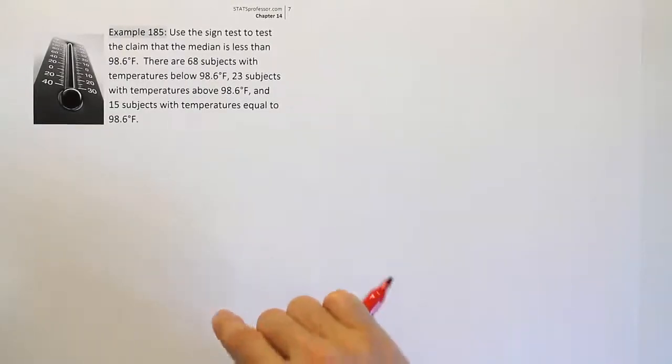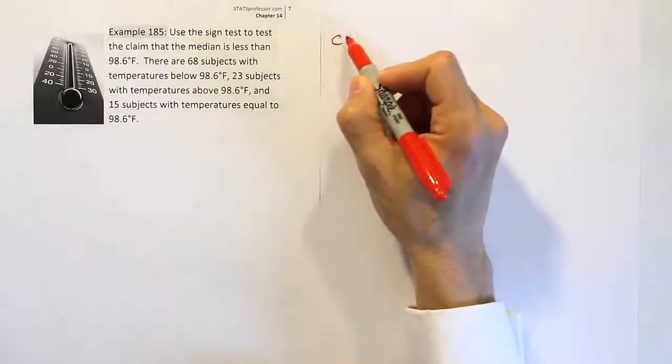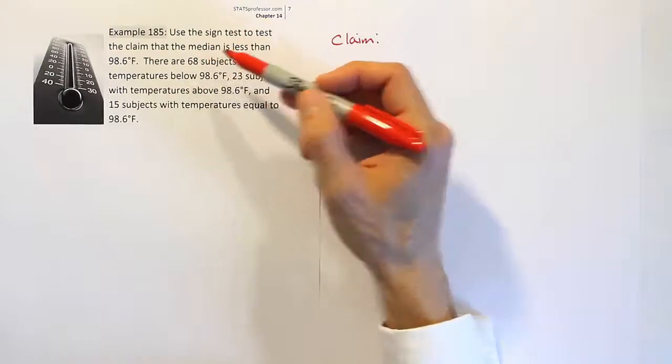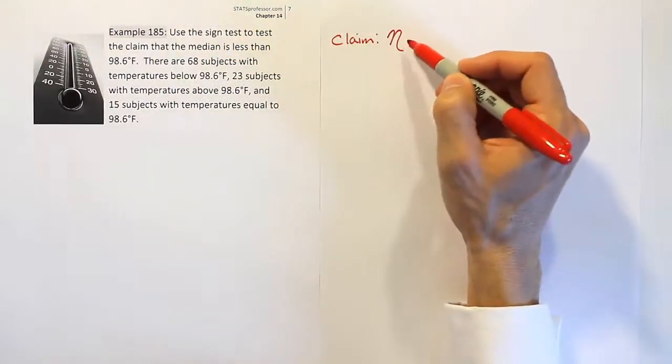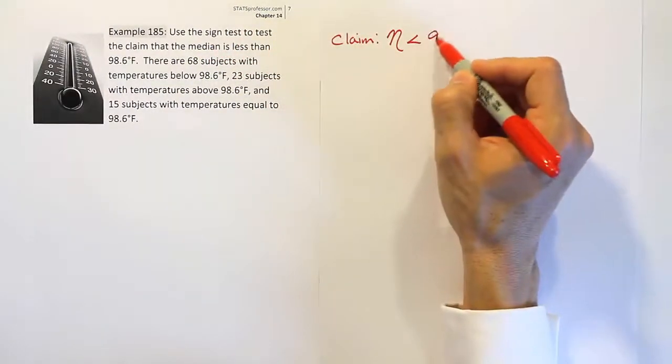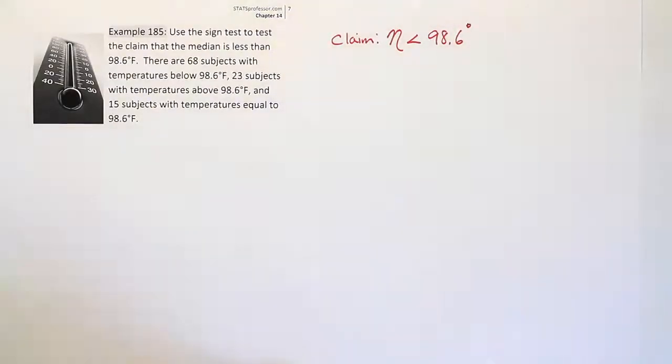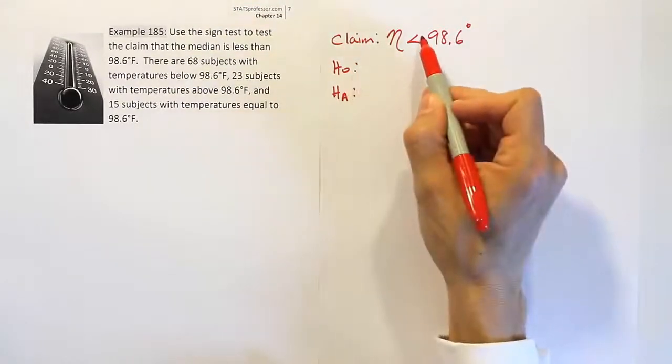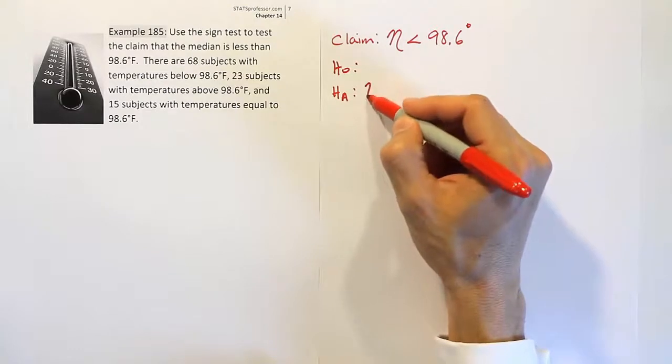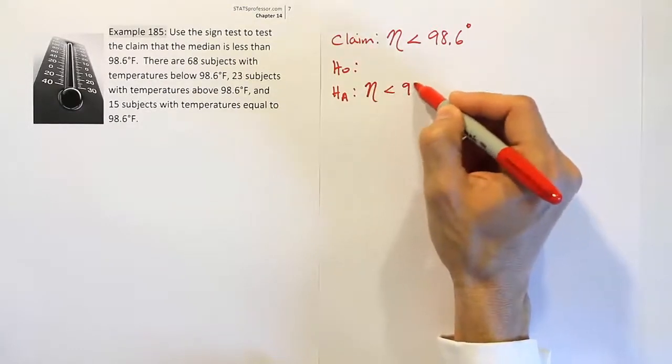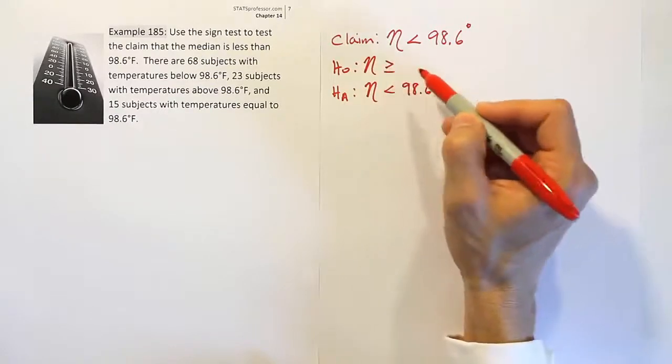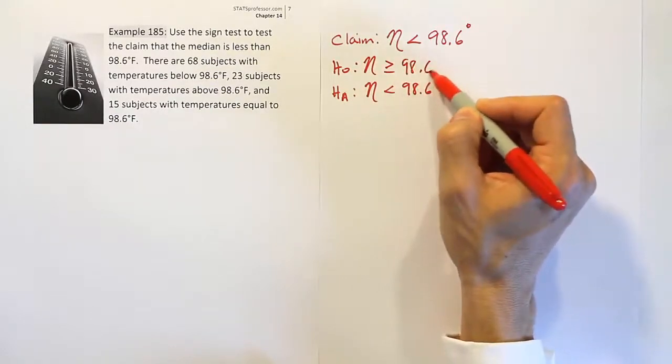So the first thing we want to do is express the claim in the problem. The claim is expressed pretty clearly in that first sentence: the median is less than 98.6 degrees Fahrenheit. H0 and HA follow from that. The claim has a less than symbol, which means it's the same as HA. And H0 has the opposite idea. It'll be greater than or equal to 98.6 degrees.